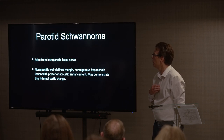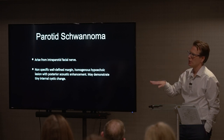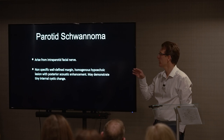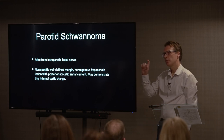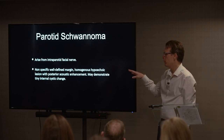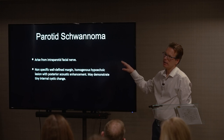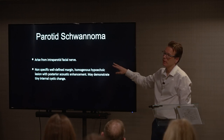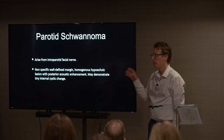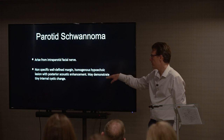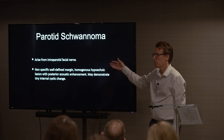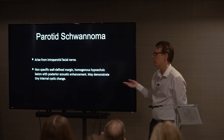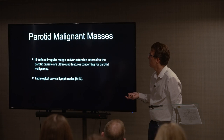Parotid schwannoma — the facial nerve courses through the parotid. I've come across these not on ultrasound but as incidental findings on MR scanning, more commonly found just below the stylomastoid foramen. They tend to be well-defined and hypoechoic within the gland, with overlapping appearance with other lesions. If they have internal cystic change they could look like a Warthin's, or like a pleomorphic adenoma if you don't see that lobulated margin — just something to be aware of.